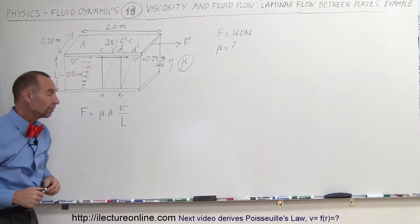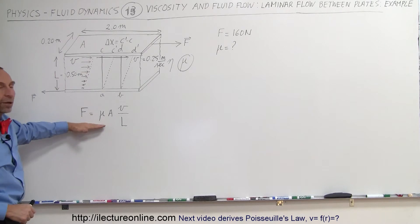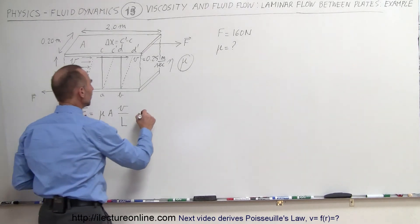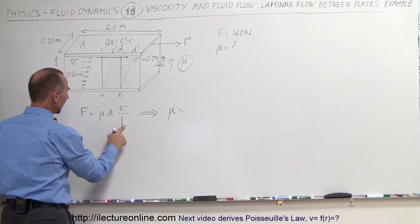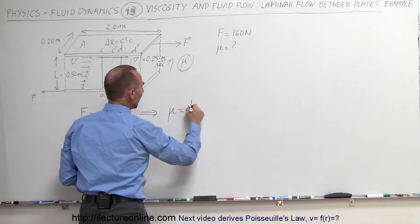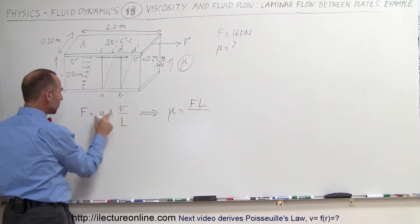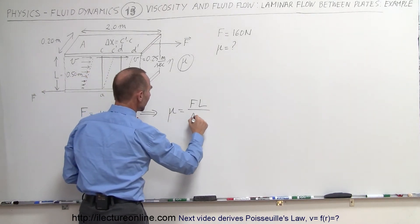Since the change in velocity is linear, we can use this equation. We'll solve this equation for mu, which means that mu equals—we bring the L to the other side—so that would be F times L divided by A and V moved to the denominator, so A times V.